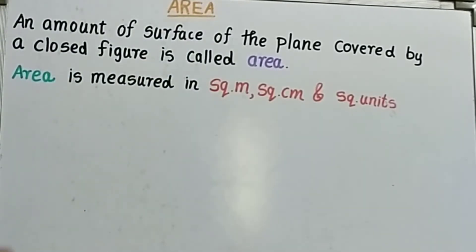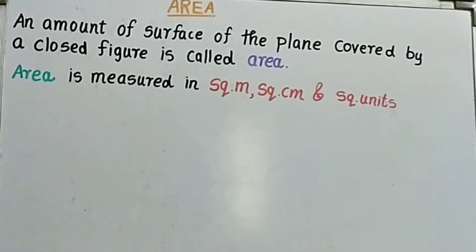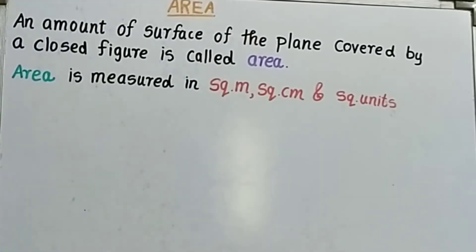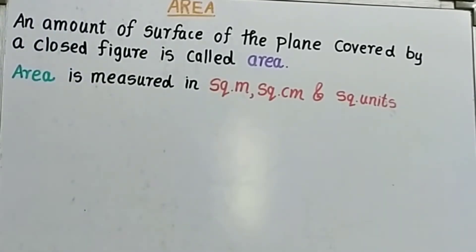This is a square board; it has its own area, and the area is measured. The units of area are square meter, square centimeter, or square units. If the lengths given are in meters, we will use square meters. If they are in centimeters, then square centimeters, or square units if such units are given. This is the basic definition of Area.